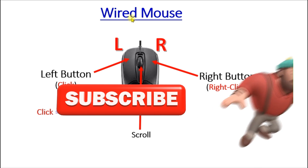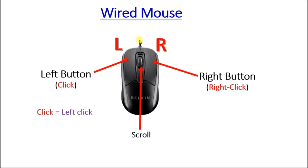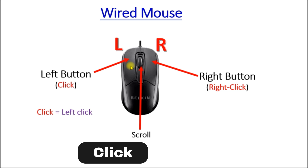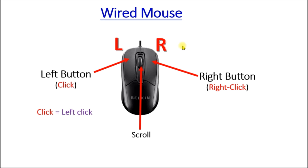It is a wired mouse — it has a wire here that is connected to the computer. There is a left button and there is a right button. Instead of saying 'left click,' you will normally just hear 'click.' So click means left click. To right click, you just press the second button here.